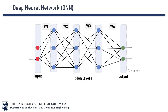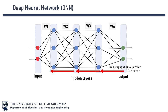One thing to notice is that the output is not always what we want — there is a margin of error represented by delta. This error is fed back through the hidden layers in a backward fashion. This mechanism is called the back propagation algorithm, used to minimize the error. Depending on this error, the weights of matrices W1, W2, W3, and W4 are adjusted to bring the output nearest to the optimum values.